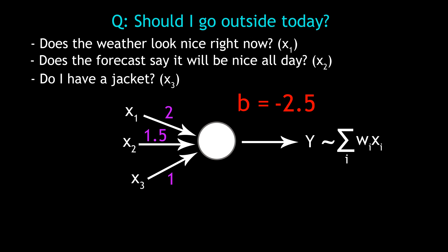And now you go and gather all of the relevant information. Say the weather does look good outside, but the forecast doesn't say it'll be nice all day, and you do have a jacket. The inputs are now known, so we can compute the sum, which comes out at 0.5. The output y is only equal to one, as the sum plus the bias is greater than or equal to zero.